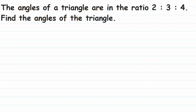Before we start, we have to understand a very important property of a triangle — that is, the sum of all angles is 180°. Now, they have given the angles in a ratio, that is 2:3:4. Whenever angles are given in a ratio, we have to take a common factor.